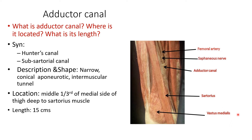It is conical in shape and it is a narrow, conical, aponeurotic, and intermuscular tunnel — so it is between the muscles. Its location is the middle one-third of the medial side of the thigh, deep to the sartorius muscle. And it is about 15 centimetres in length.